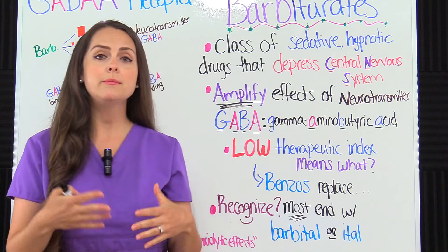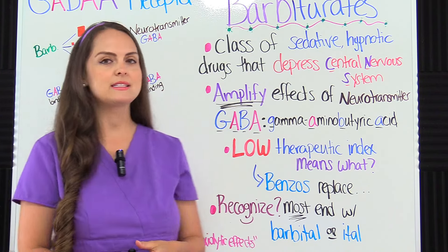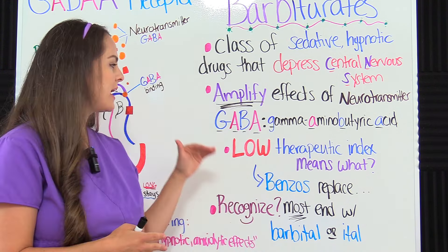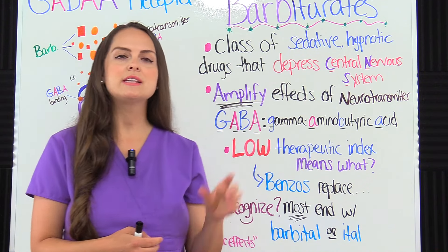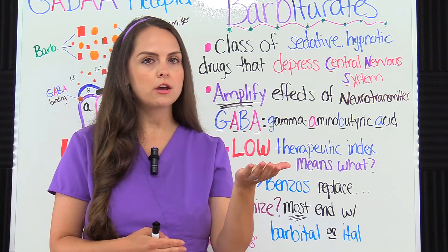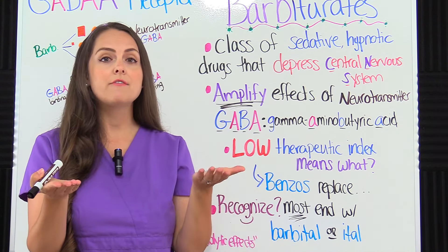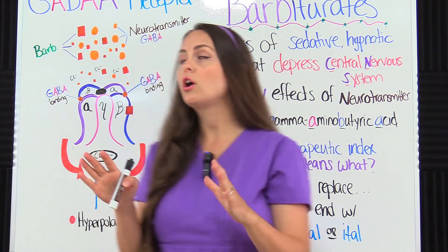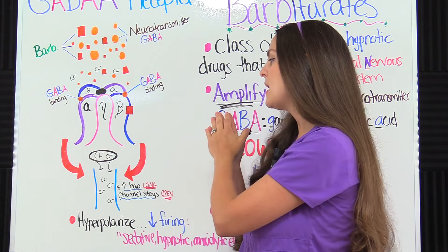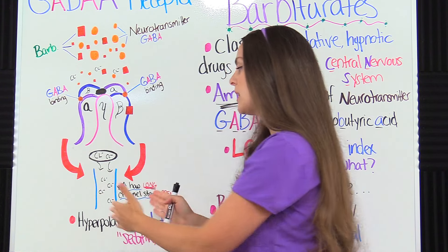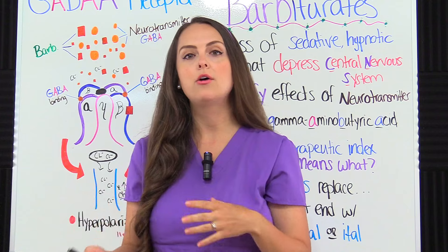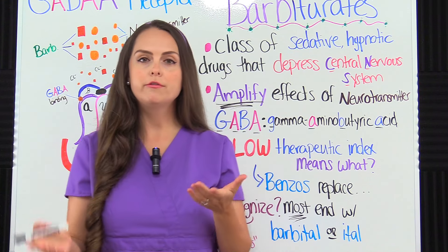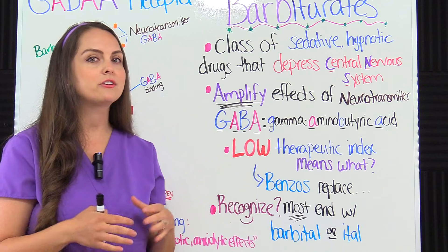Over the years, barbiturates have really been slowly replaced with benzodiazepines, especially for the treatment of insomnia and anxiety. Barbiturates have a very low therapeutic index, meaning there is a small threshold between the therapeutic dose and the toxic dose, so there is a higher incidence of overdose with barbiturates compared to benzodiazepines. Benzodiazepines and barbiturates target the same receptors but work differently. With benzos, there's actually an antidote to reverse the effects of an overdose; with barbiturates, there is not one.